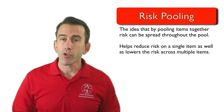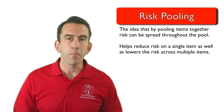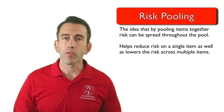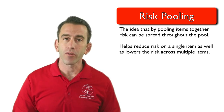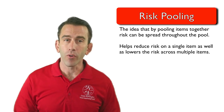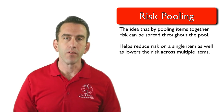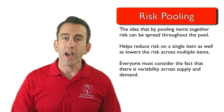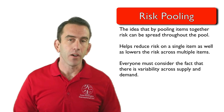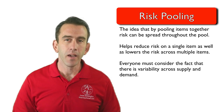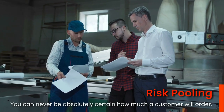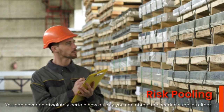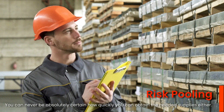While lean organizations focus highly on building to demand only, the reality is that many traditional manufacturers tend to consider many different factors when they are deciding how much inventory to hold and how to order or produce their inventory. One of the most basic factors that everyone must consider is the fact that there will be variability across both supply and demand. You can never be absolutely certain how much a customer will order or how quickly you can obtain the needed supplies to produce to demand.